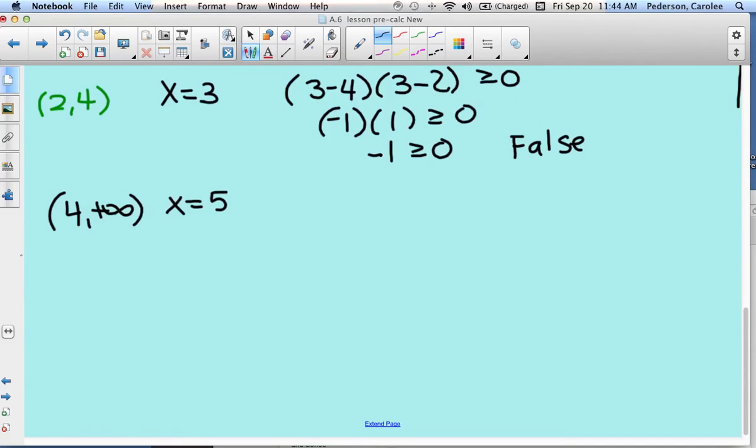So we plug it in the blue one again. 5 minus 4, 5 minus 2, greater than or equal to 0. 5 minus 4 is 1, 5 minus 2 is 3. Multiply the two numbers on the left. Is 3 greater than or equal to 0? Yes, this is true. So this will be a solution.